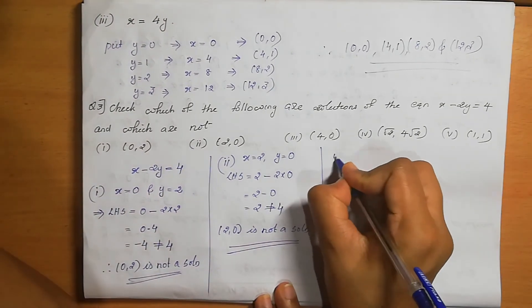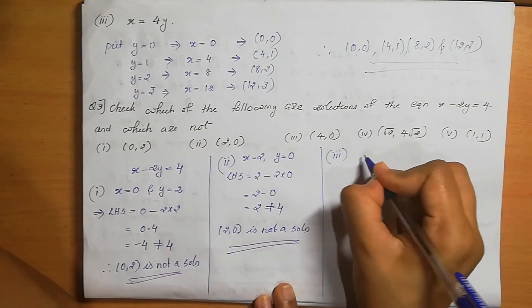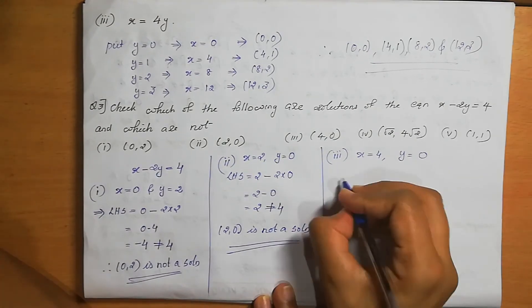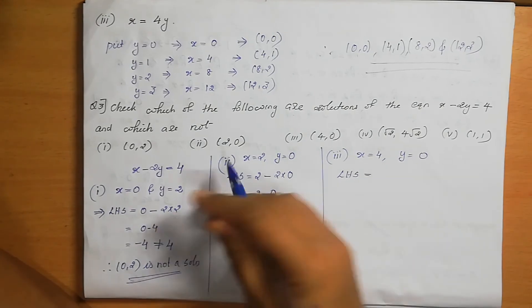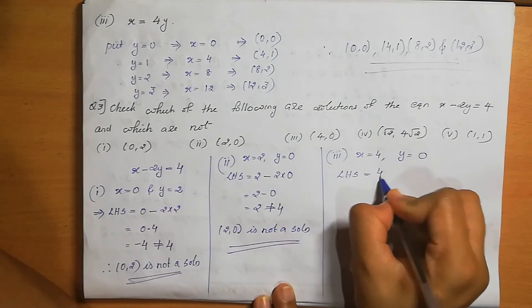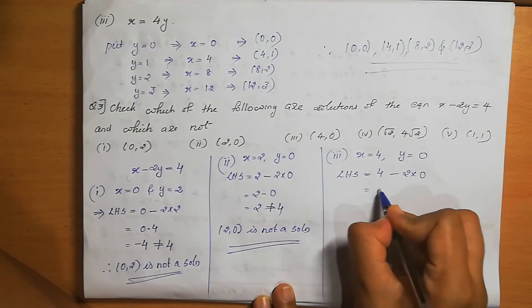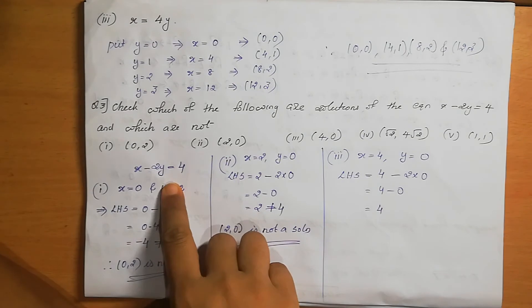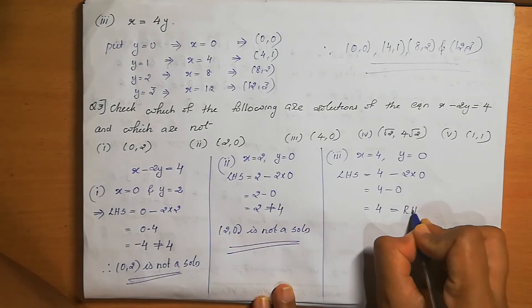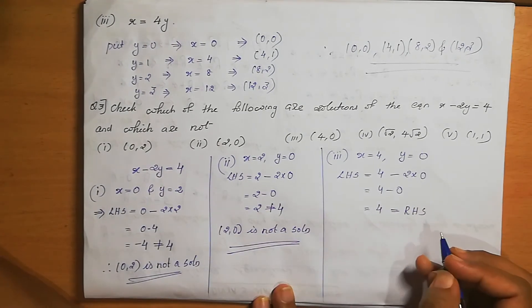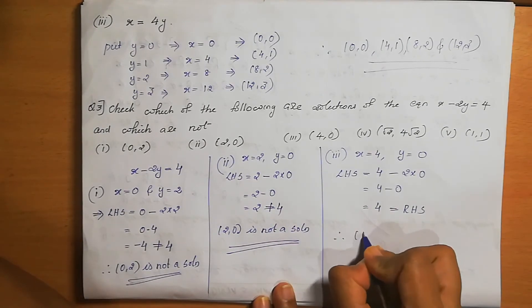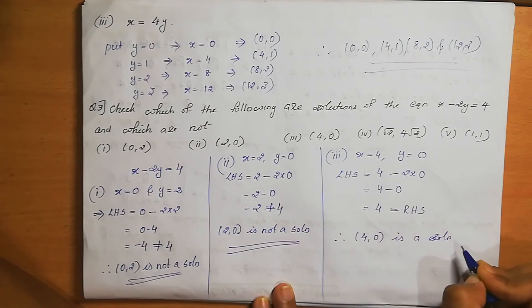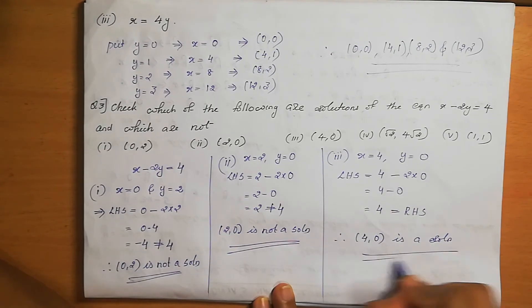Third, check (4, 0): x=4, y=0. LHS = 4 − 2×0 = 4 − 0 = 4. Since 4 = 4, LHS = RHS. Therefore, (4, 0) is a solution of the equation x − 2y = 4.